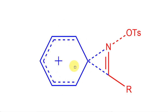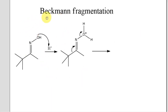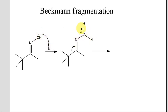Now let us consider a special case: Beckman fragmentation. Consider a species where one group is a tertiary butyl group, which can stabilize the developing positive charge. In normal Beckman rearrangement, the whole group migrates to nitrogen. But here there is a difference: instead of migration, the bond electrons stay between nitrogen and carbon — forming a C≡N triple bond — and the tertiary butyl group leaves as a carbocation.